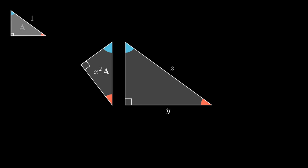Similarly, these epic copies must have areas Y squared A and Z squared A respectively.